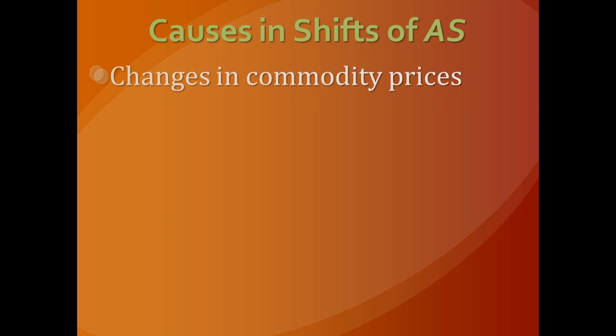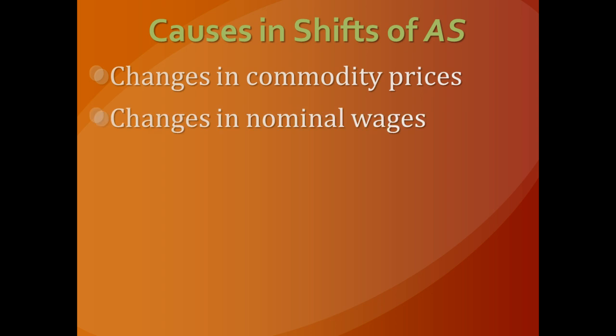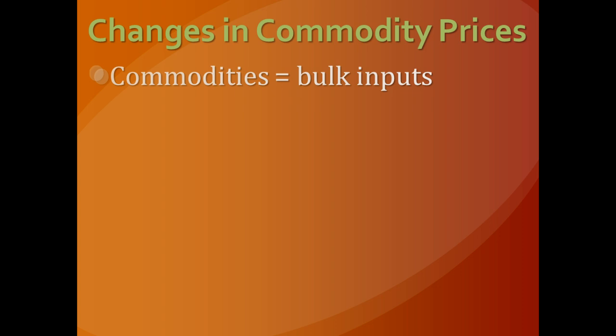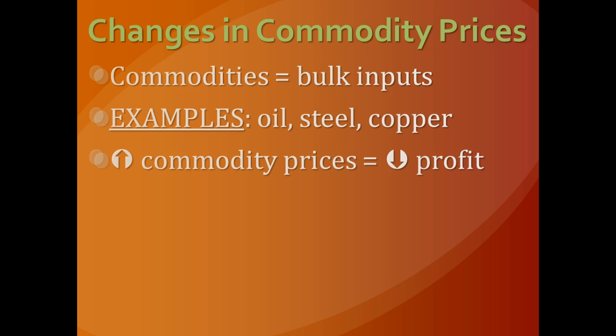So what causes shifts in aggregate supply? The first is changes in commodity prices — the inputs that go into making things. Oil, steel, and copper are components to manufacturing, and those are what we call commodities. If their prices were to rise, the cost of production goes up, which hurts the profit of businesses no matter what the price level is. As a result, they're not as willing to produce as many goods as before, and that causes the short-run aggregate supply curve to shift to the left. If commodity prices get cheaper, profits rise, they're willing to make more goods regardless of price level, and aggregate supply shifts to the right.